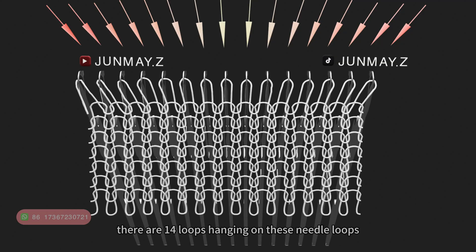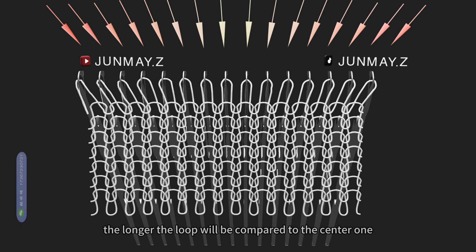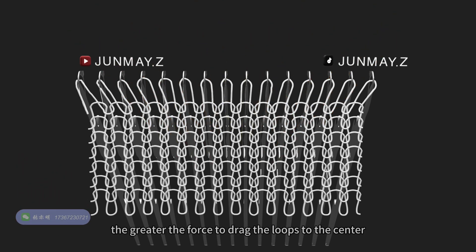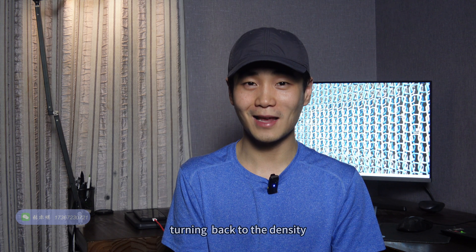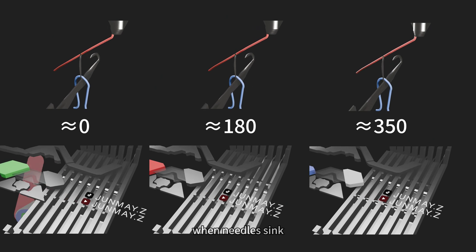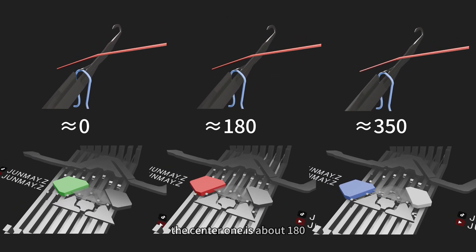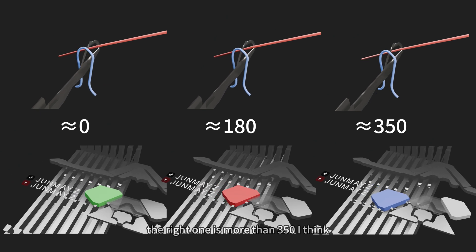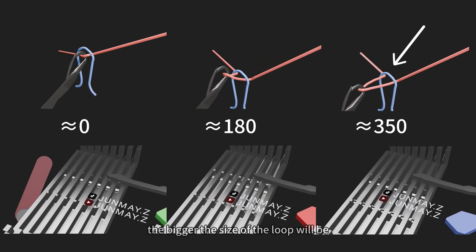There are 14 loops hanging on these needles. The loops are pulled by the roller and turned to a straight line. The further from the center part, the steeper the diagonal angle, and the longer the loop will be compared to the center one. This weight of force drives the loops toward the center, which is why loops on the outer edges sink earlier than the loops in the center. Checking the lines of the stretched loop when needles sink: the first one, the density is about zero; the center one is about 180; and the wider one is more than 350. The deeper the needle sinks, the bigger the size of the loop will be.